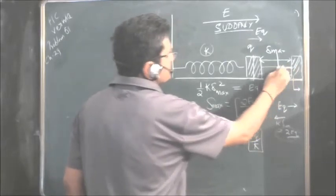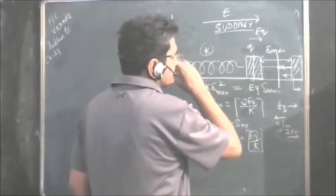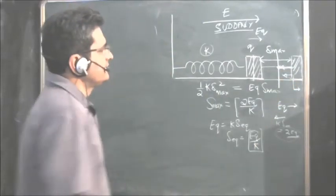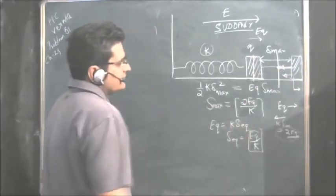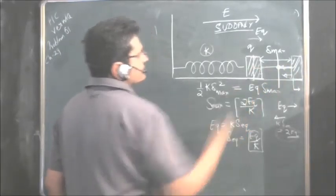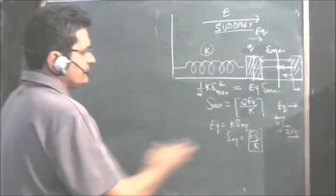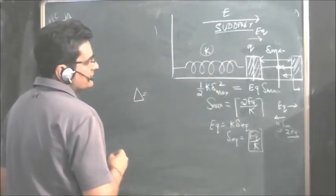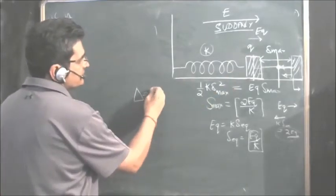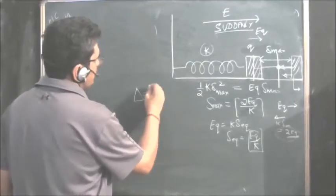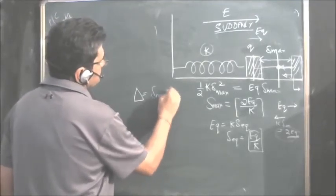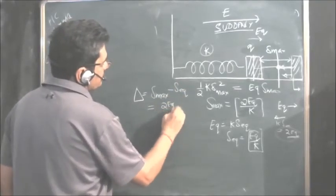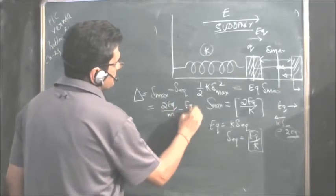At the equilibrium position the net force on the body is zero, but it has acquired velocity due to the energy released. Because of this velocity it reaches the other extreme, and this motion keeps happening. The amplitude of SHM is delta maximum minus delta equilibrium, which equals 2EQ/K minus EQ/K, giving EQ upon K.